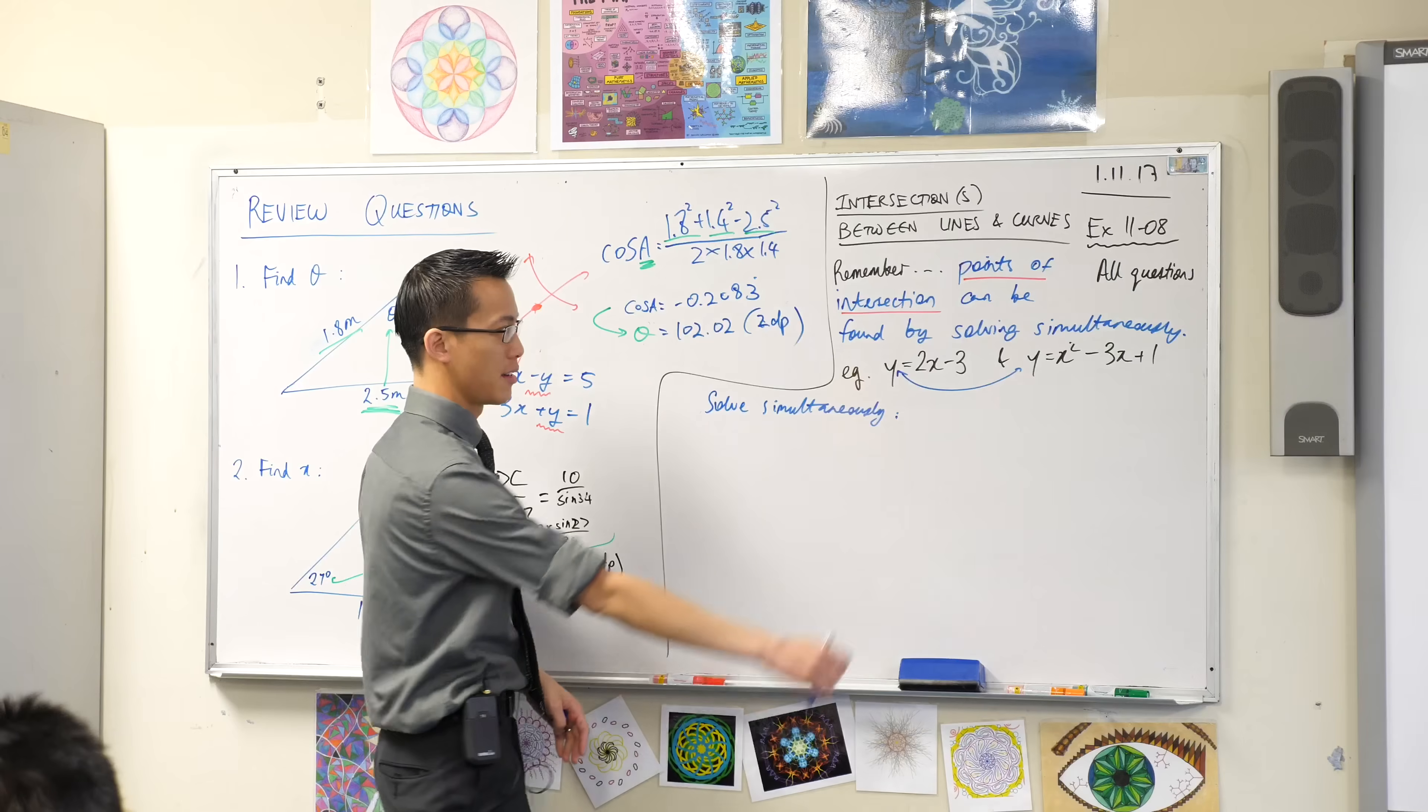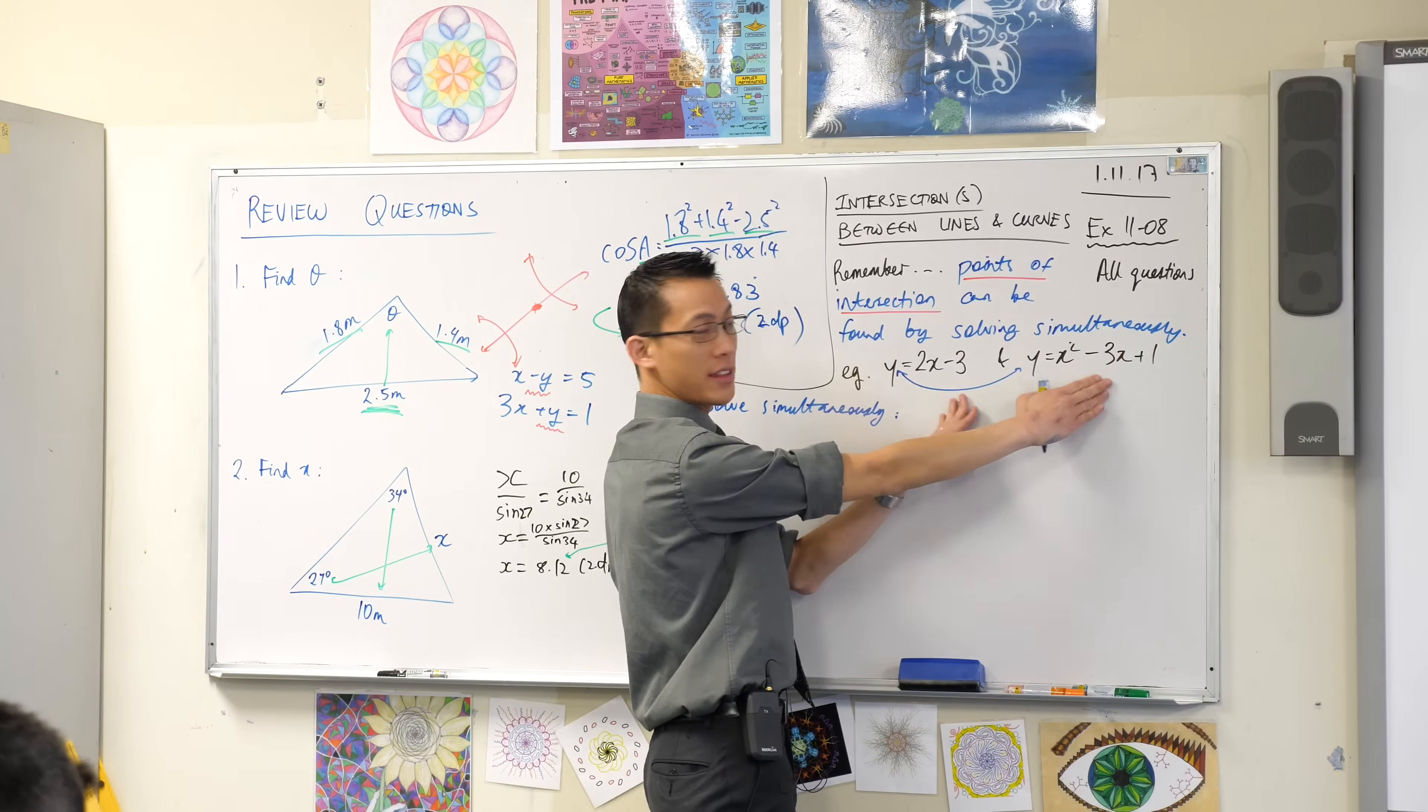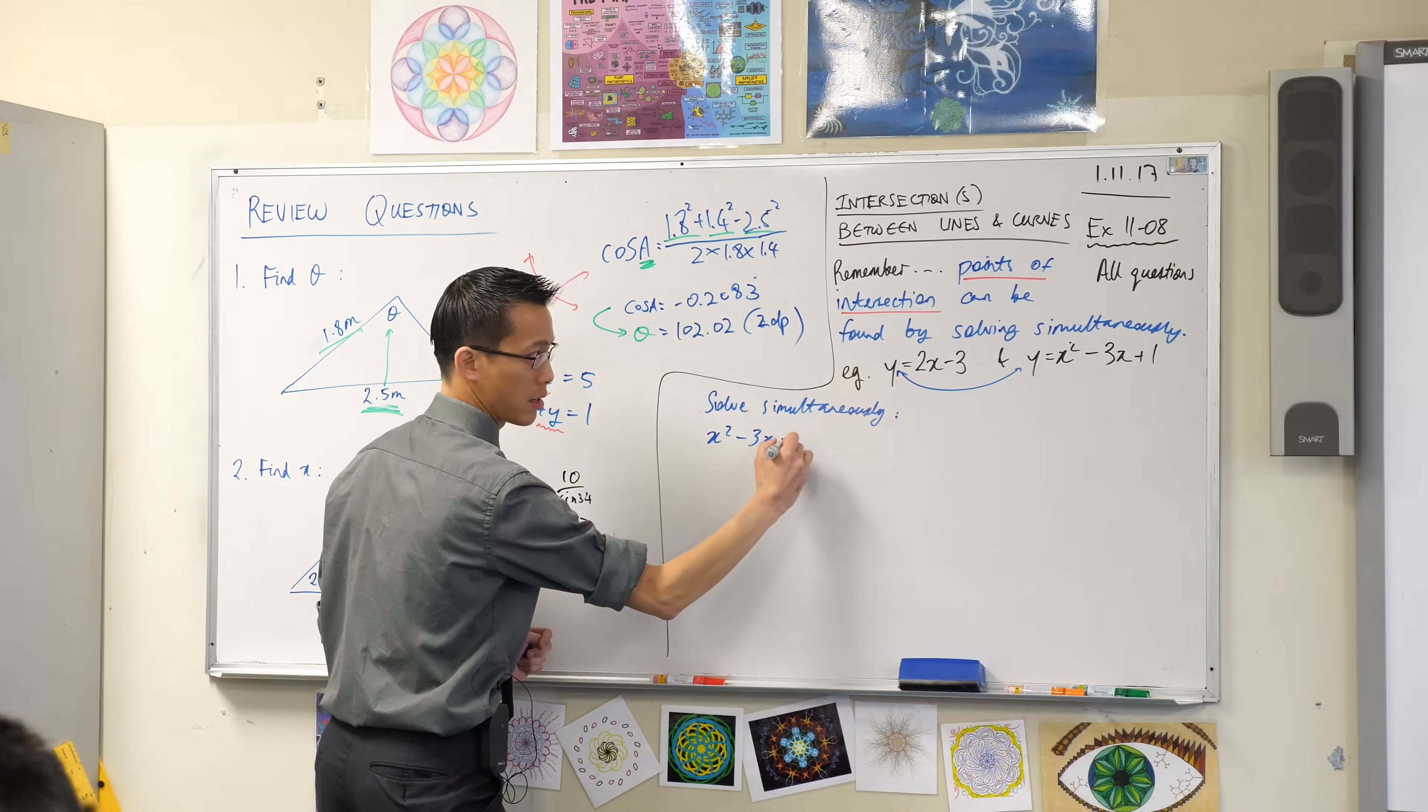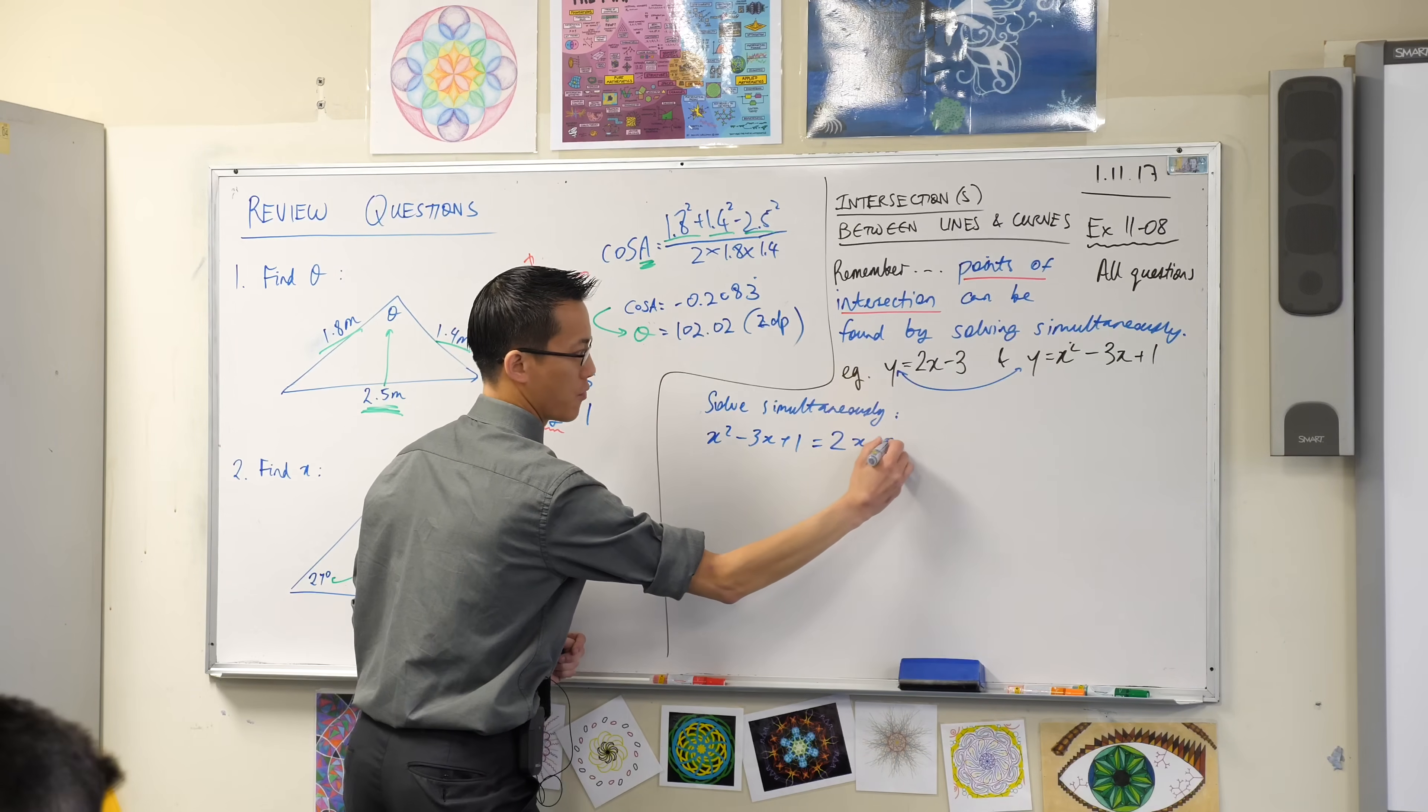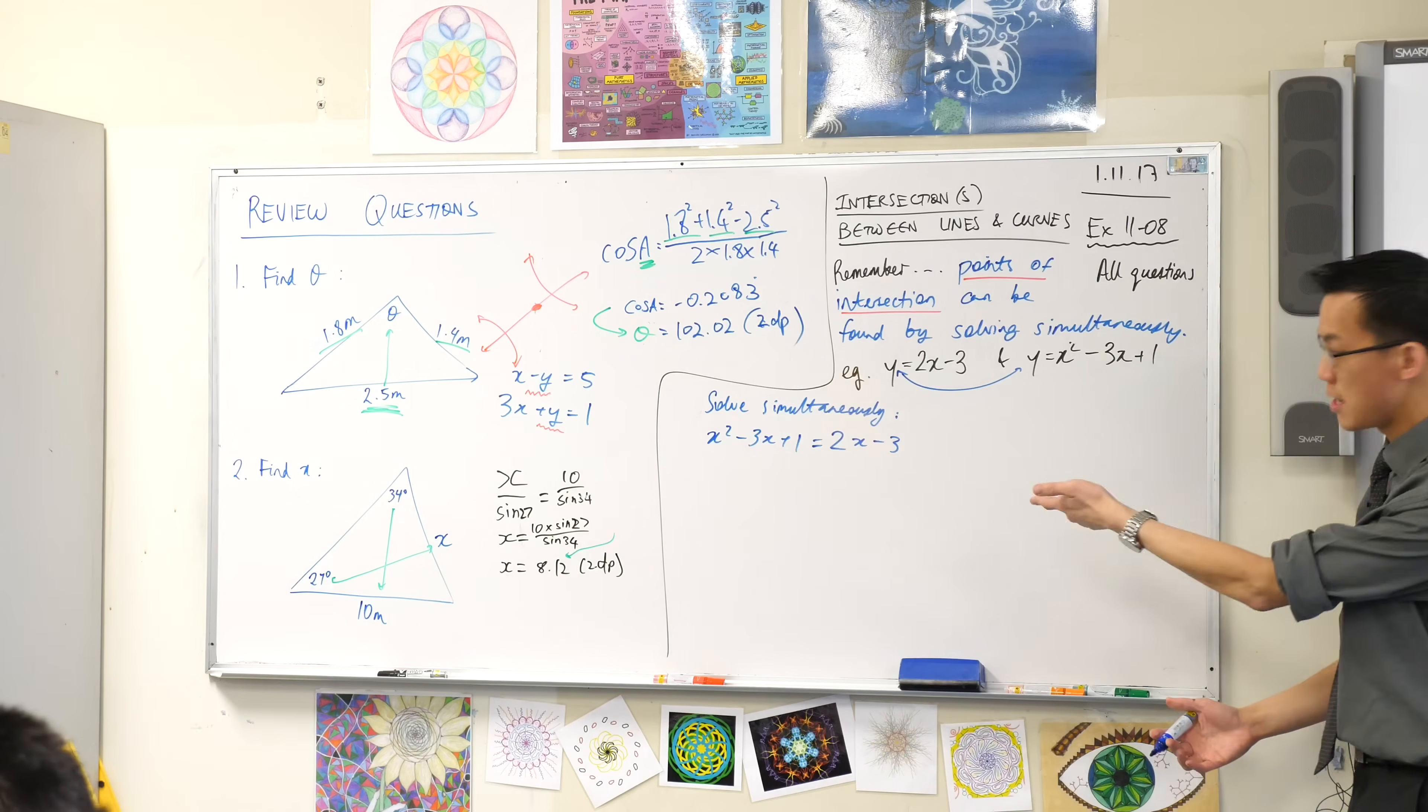My next line is, being that both of these equations are equal to y, that means both of these are equal to each other. So let's write that down. x squared minus 3x plus 1 equals 2x minus 3. They're both equal to y, so they must both be equal to each other.